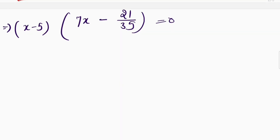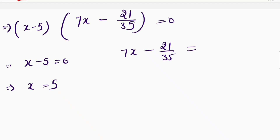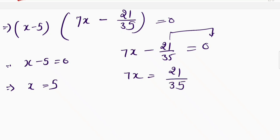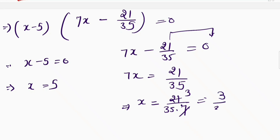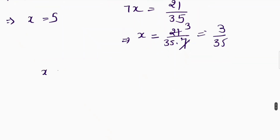Taking x minus 5 out as a common factor, I'm left with 7x minus 21/35 equals 0 inside the bracket. This gives two values of x. First: x minus 5 equals 0, so x equals 5. Second: 7x equals 21/35, so x equals 21 divided by 35 divided by 7, which simplifies to x equals 3 divided by 35. So the two values of x are 5 and 3/35.